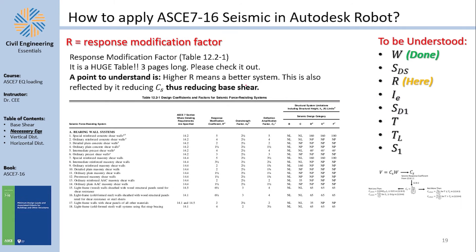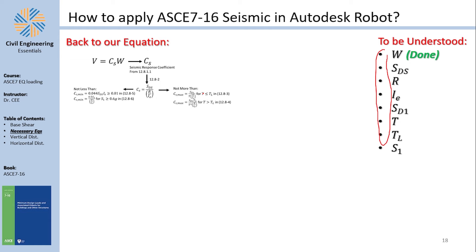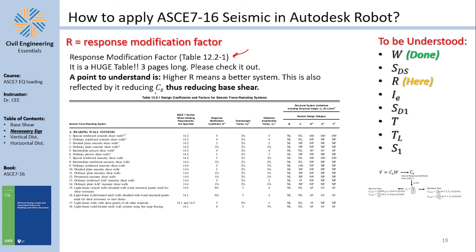The response modification factor R is based on table 12.2-1. It measures how well a structural system resists seismic forces. A higher R means a lower Cs and therefore a smaller base shear — systems with higher R are better suited for seismic resistance, since R appears in the denominator of the Cs equation.